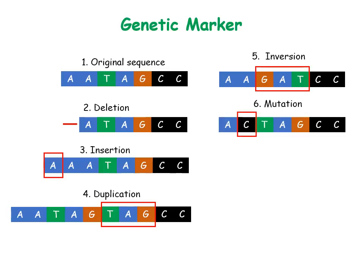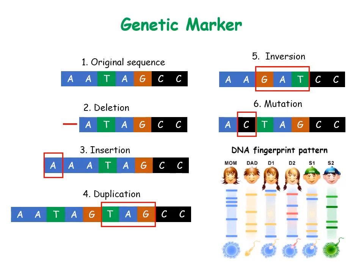Such variations are seen as DNA bands on gels, also known as a DNA fingerprint pattern. This picture shows a DNA fingerprint pattern with variation among parents and their children based on variation in their DNA sequences. The main advantages of genetic markers are that they are not influenced by environment — that is, they are very stable — and that the number of markers is almost unlimited.